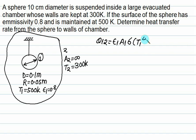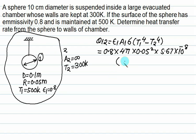So we can directly solve this equation as Q12 equals to epsilon 1 into A1 into sigma into T1 to the power 4 minus T2 to the power 4. Epsilon 1 is 0.8. Surface area of sphere is 4 pi R square. R is 0.05 square. Sigma is 5.67 times 10 to the power minus 8, 500 to the power 4 minus 300 to the power 4. The heat transfer from the sphere to the atmosphere is 77.56 Watt.